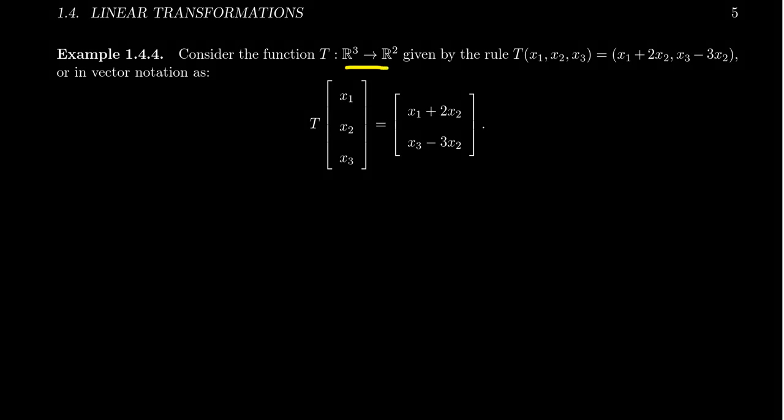R3 denotes the vector space of column vectors which contain three real numbers, and R2 would be the vector space of column vectors containing exactly two real numbers. We've talked about previously that R3 and R2 are vector spaces — they're some of our favorite vector spaces. We're going to define a function from R3 to R2 by the following rule.